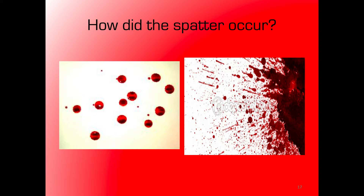Looking at two examples: on the left we've got a passive fall — that blood must have hit the surface at about a 90-degree angle because of its circular characteristic. On the right, you can make an argument for pooling off to the right, but I'd refer to most of it as splashes. There are some circular drops that look like passive falls as well, so there's a combination of things. But all those long stretched-out droplets are splashes, and they're really useful for determining the direction in which the blood traveled.